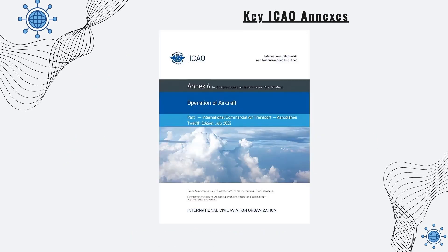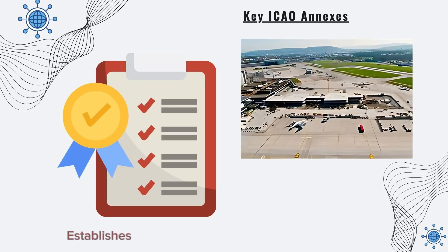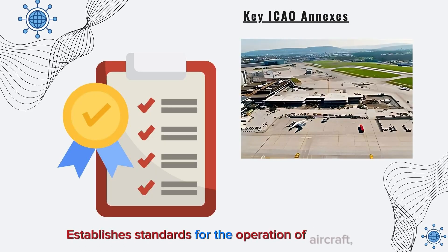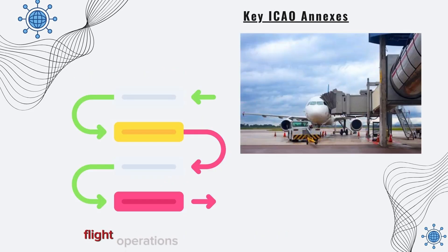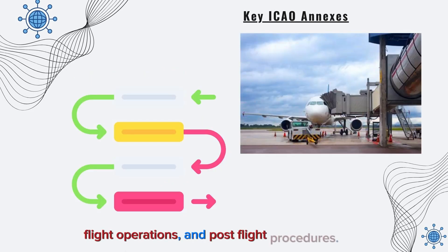Annex 6, Operation of Aircraft, establishes standards for the operation of aircraft, including pre-flight planning, flight operations, and post-flight procedures.